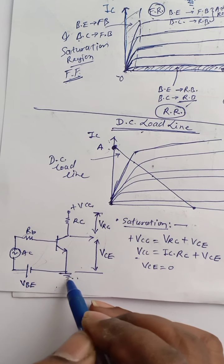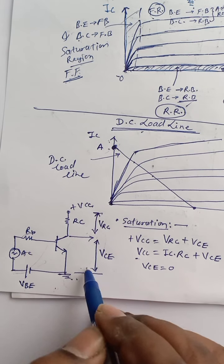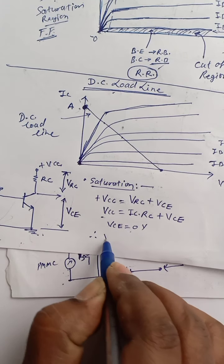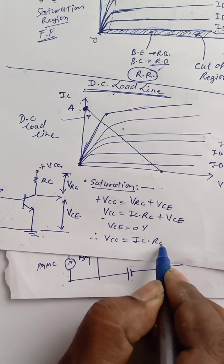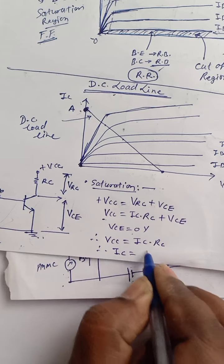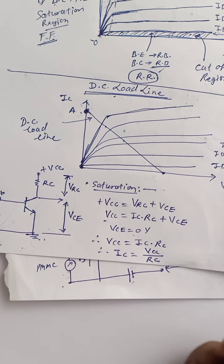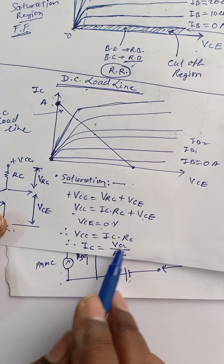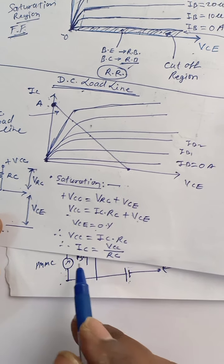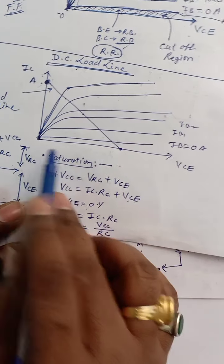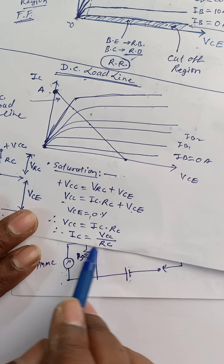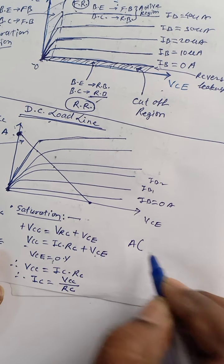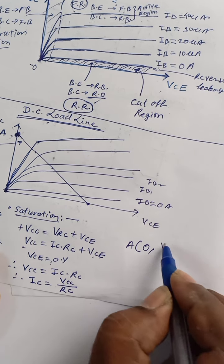When transistor operates in saturation, IC increases and the collector voltage drops. So VCE equals zero. If we use VCE equal to zero in the output equation we get VCC equals IC × RC. Therefore IC equals VCC divided by RC. In saturation the coordinate of point A is: (0, VCC/RC).